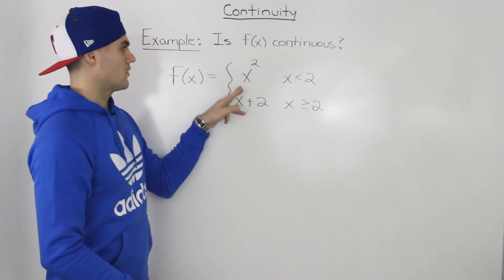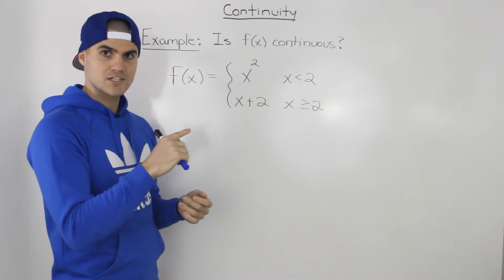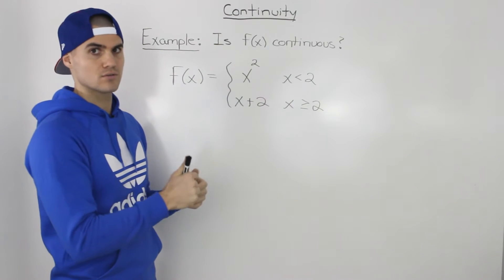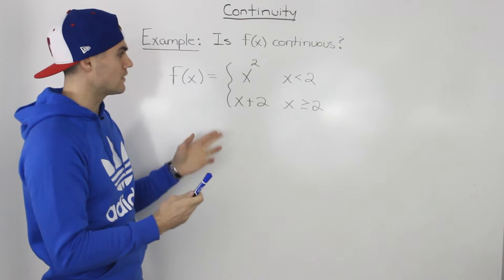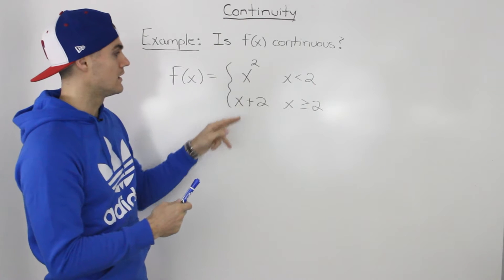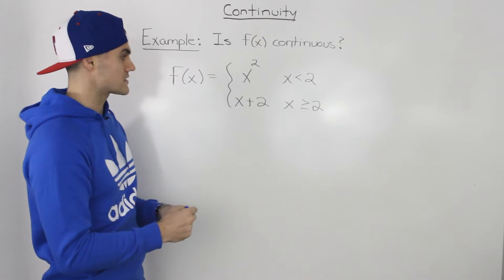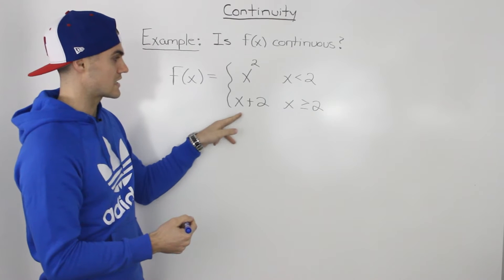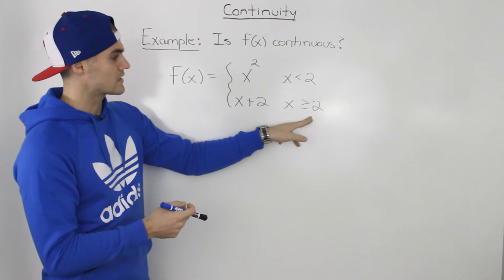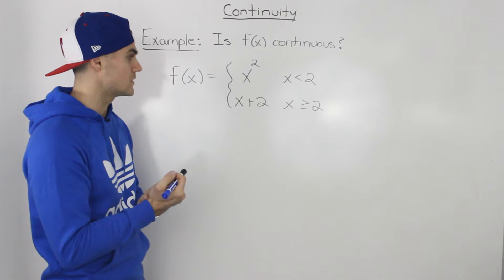Notice that x squared is a polynomial — just a quadratic — and we know it's continuous by itself. So all x values less than 2 will be continuous. Similarly, for all x values greater than 2, the function is continuous because x plus 2 is just a line and is continuous across its whole domain.